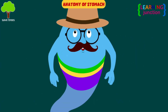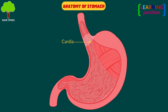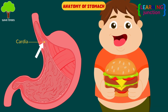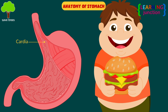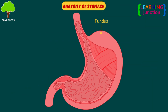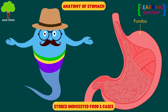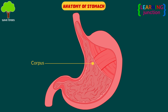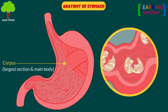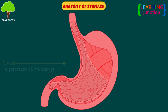Now, we will see the parts of the stomach's anatomy. The cardia — it is the top part of your stomach and contains the cardiac sphincter, which prevents food from traveling back up your esophagus. The fundus — it's a rounded section next to the cardia and stores both undigested food and gases. The corpus — it is the largest section and main body of your stomach; in this part, your stomach contracts and begins to mix foods.